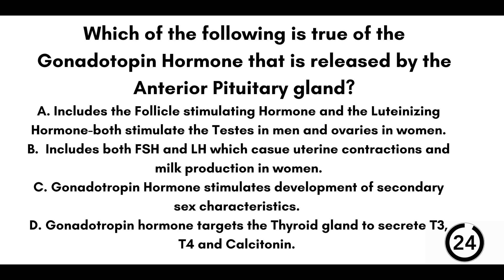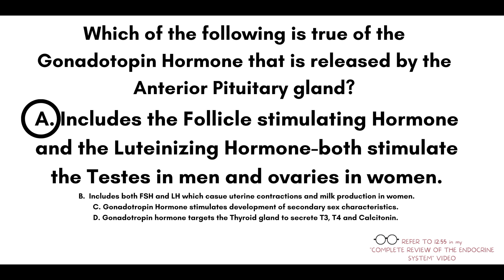Question number nine: which of the following is true of the gonadotropin hormone released by the anterior pituitary gland? A) It includes the follicle stimulating hormone and the luteinizing hormone, both of which stimulate the testes in men and the ovaries in women. B) Includes both FSH and LH which cause uterine contractions and milk production. C) Gonadotropin hormone stimulates development of secondary sex characteristics. Or D) Gonadotropin hormone targets the thyroid gland to secrete T3, T4, and calcitonin. Our answer is A — FSH and LH both stimulate the testes in men and the ovaries in women.